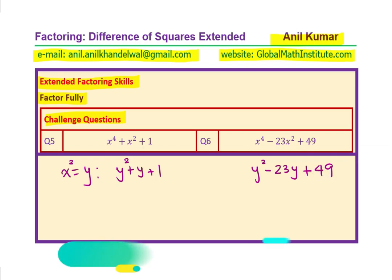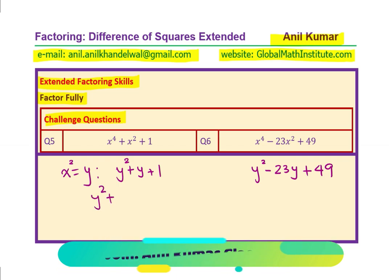Now, if you write like this, you do observe that we have a perfect square at the end. What I am trying to say is that you have y square plus y in the center and here we have plus 1, and in this case, we have y square and here we have plus 7 square. Do you see that? 1 square and 7 square.